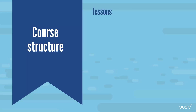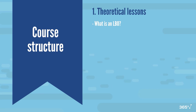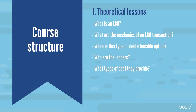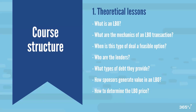Here's our plan of action. We'll start with several theoretical lessons in which we will discuss: what is an LBO, what are the mechanics of an LBO transaction, when is this type of deal a feasible option, who are the lenders and what types of debt they provide, how sponsors generate value in an LBO and how to determine the LBO price. In the last theoretical lecture, we'll examine the Dell case study, which has been called the deal of the century in some financial articles.